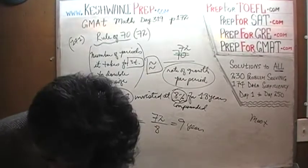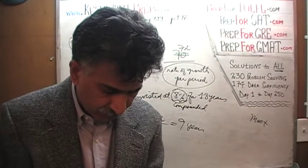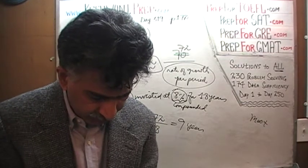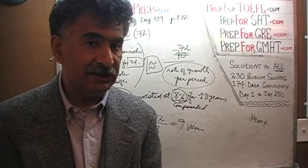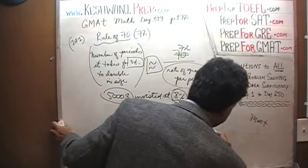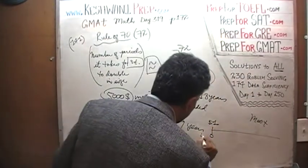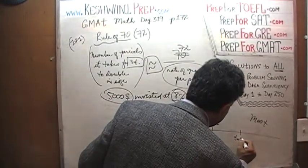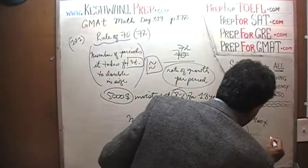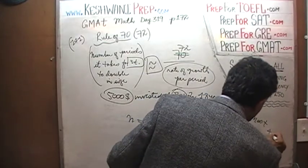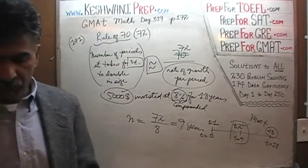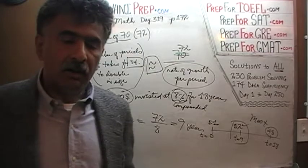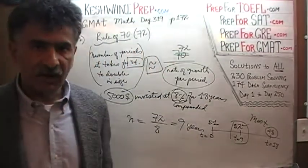The question asks: if $5,000 is invested in a long-term bond paying 8% interest compounded annually, what will be the approximate total amount of the investment 18 years hence? Since the money doubles every 9 years, after 18 years it quadruples. So the initial investment of $5,000 will become $20,000 at the end of 18 years.